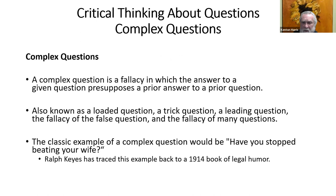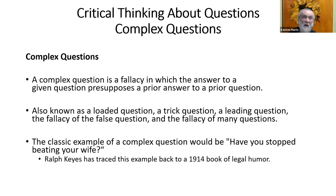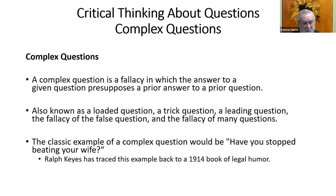Complex questions. A complex question is a fallacy in which the answer to a given question presupposes a prior answer to a prior question. This is also referred to as a loaded question, a trick question, a leading question, the fallacy of false questions, the fallacy of many questions. The classic example of a complex question is: have you stopped beating your wife? Notice it presumes a yes or no answer. But if you say yes — so you used to beat your wife. If you say no — so you're still beating your wife. There's no way out. The question itself presumes that at one time you did beat your wife, but it presumes it without evidencing it or even asking it. It would be different if the prior question had been asked and answered affirmatively — but as a standalone question, it is complex.